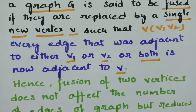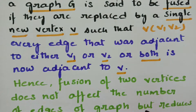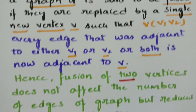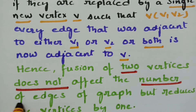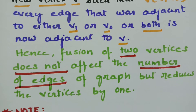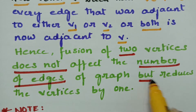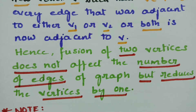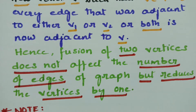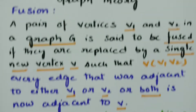The fusion of two vertices does not affect the number of edges. The number of edges remains the same, but it reduces the number of vertices by one. So if there are four vertices in total, after fusion it will reduce by one — the vertices will be three and the number of edges will not be affected. This is the concept of fusion.